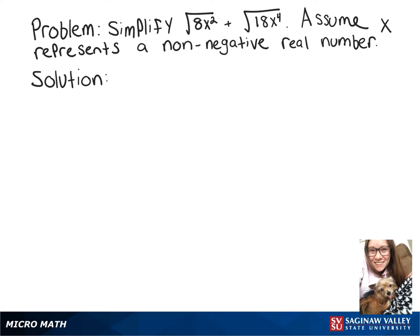We're going to simplify the square root of 8x squared plus the square root of 18x to the fourth. So we'll start by simplifying each of those things individually.